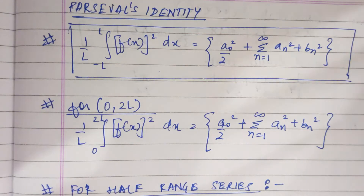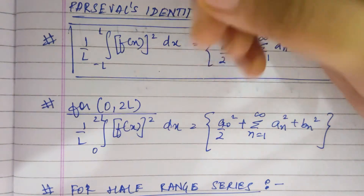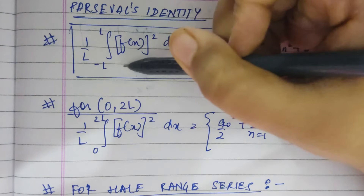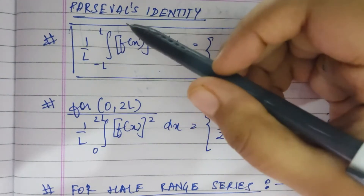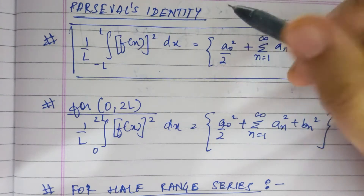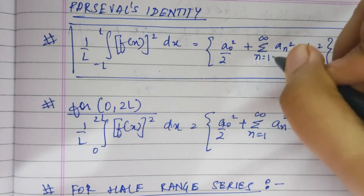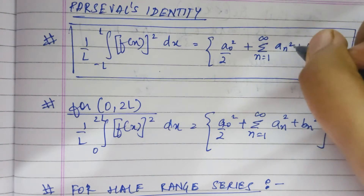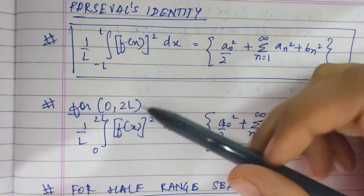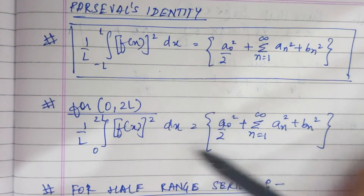The next topic is Parseval's identity. Learn these formulae: 1 by l times the integral from minus l to l of f(x) squared dx is equal to a naught squared by 2 plus summation from n equals 1 to infinity of a_n squared plus b_n squared. For limits from 0 to 2l, this is the same thing.